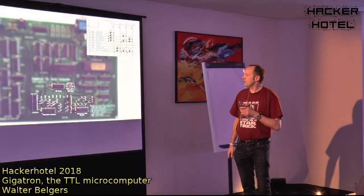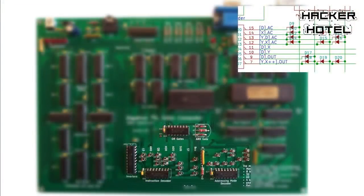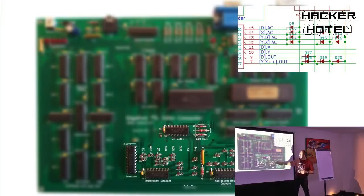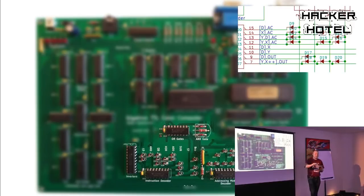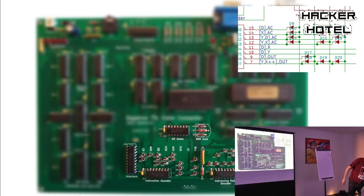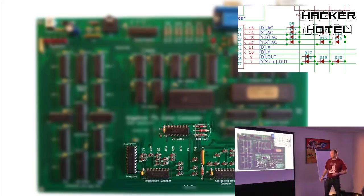The instruction decoder and address mode decoder on the board is actually a bunch of diodes — a built-in ROM lookup table using diodes to orchestrate which bits trigger which actions. You can actually see the instruction decoder on the board. If you wanted, you could rewire it by moving a diode and change the instruction set of the computer.